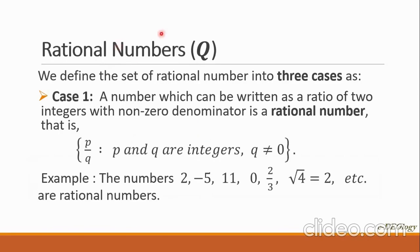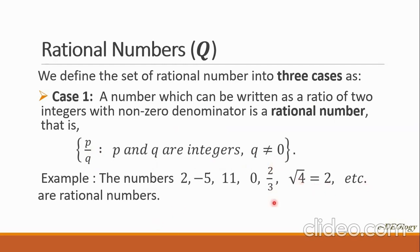The next group is rational numbers, denoted by Q. There are three cases for a rational number. Case one: a rational number can be written as a ratio of two integers with a non-zero denominator, denoted by P over Q, where P and Q are integers and Q cannot equal 0. Examples are 2, negative 5, 11, 0, 2 over 3, and the square root of 4 — which simplifies to positive 2.